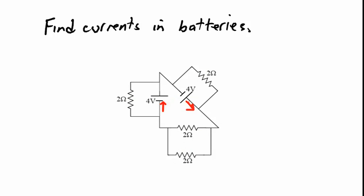The first step in solving a circuit is to look at what the question is asking. The question says I just want to know the current in the batteries. Which means, if I can find any place where I can replace resistors with their effective resistance and not affect the things I'm trying to solve for, then I should do that as a first step. I notice that right here I've got two resistors which are in parallel, and I'm not asked for the current through either one of these resistors.